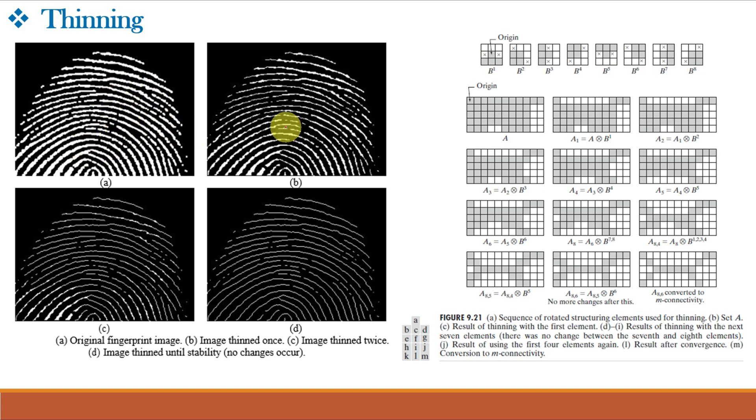This figure shows an example of thinning the fingerprint ridges so that each is 1 pixel thick. This is the original fingerprint. This shows image thinned once. This shows image thinned twice. And this final figure shows image thinned until stability or no changes occur. For this figure there are different structuring elements like this and we keep on eroding this image with different structuring elements one by one and at the end we are remained with only 1 pixel wide thinned image like this.